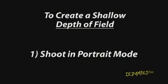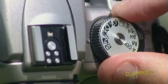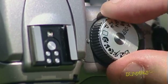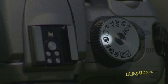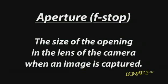Shoot in portrait mode. On your camera, look for the letter P or a head icon. Portrait mode sets the camera to a larger aperture. Aperture, also known as f-stop, refers to the size of the opening in the lens of the camera when an image is captured.